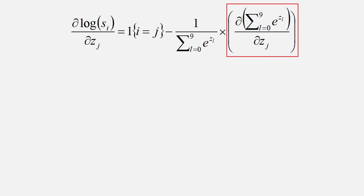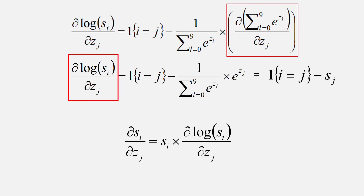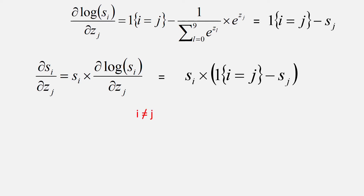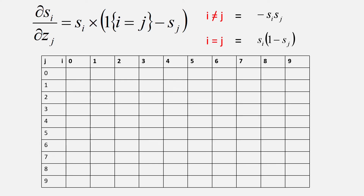So if we put together the equation, we get this. Recalling from the left-hand side, we can now write: s_i · (1 if i equals j, minus s_j). So if i is not equal to j, we have minus s_i · s_j, and if i equals j, then s_i · (1 − s_j). If we take this formula and create a matrix of every i and j combination, we get this matrix.